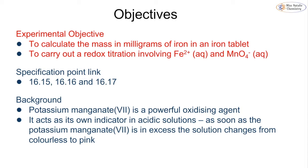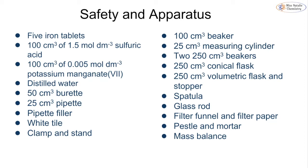The apparatus we're going to use includes our iron tablets — in this case five, but it may vary depending on the question and they will always tell you how many tablets were used. We'll also be using sulfuric acid, potassium manganate, and titration apparatus: burettes, pipettes, pipette fillers, clamps, and normal beakers, conical flasks, and volumetric flasks.